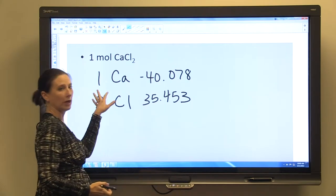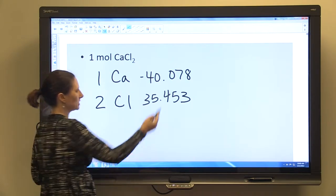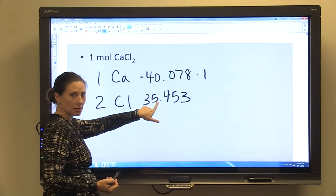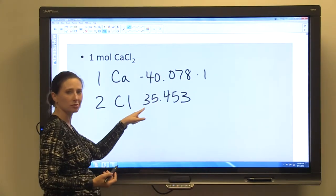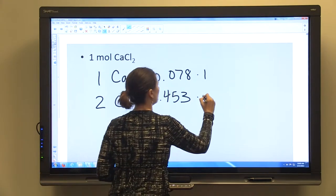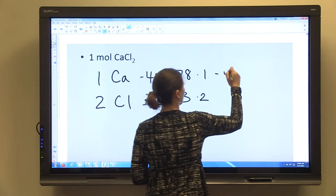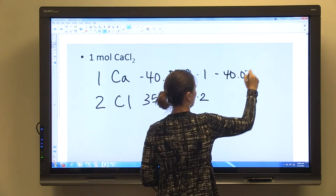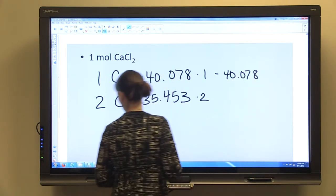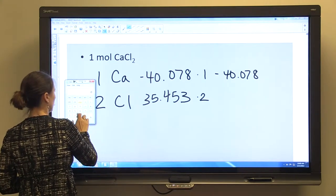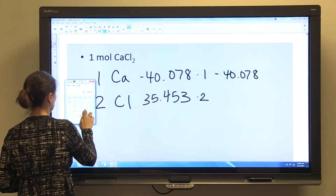Now, we only have one molecule of calcium, so we're fine to multiply this by one. But for this atomic weight, we have two molecules of chlorine, so we need to remember to multiply that by two. So we've got 40.078 and we've got 35.453 times 2, which is 70.906.